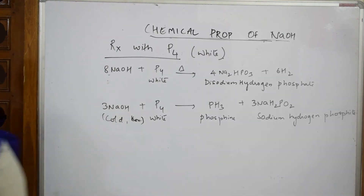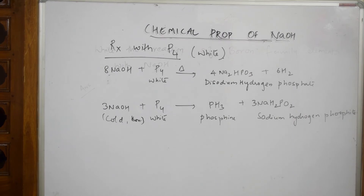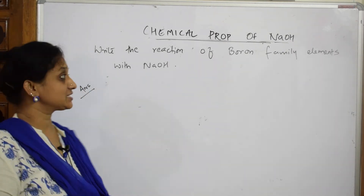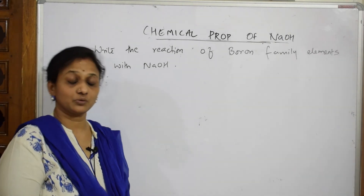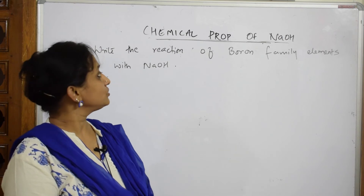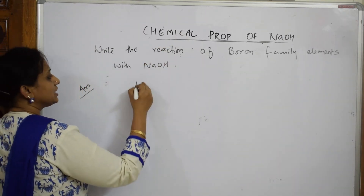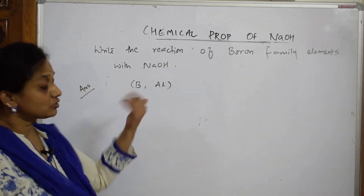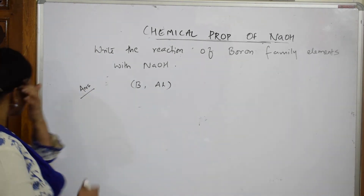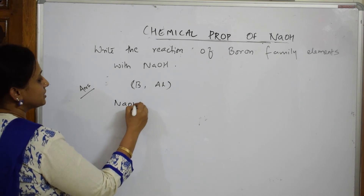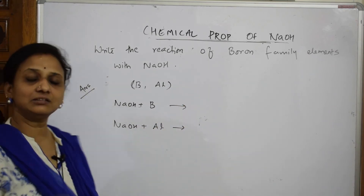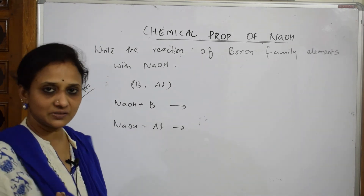Now let's see this question: write the reaction of boron family elements with sodium hydroxide. The boron family includes boron, aluminium, gallium, indium, and thallium. We only consider boron and aluminium because the remaining elements lie lower in the electrochemical series and cannot replace sodium. So we rule out the rest and focus on boron and aluminium.